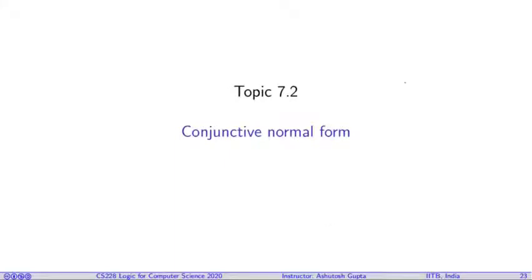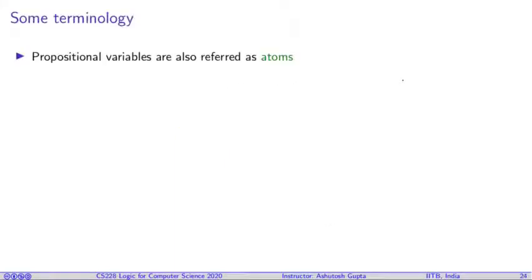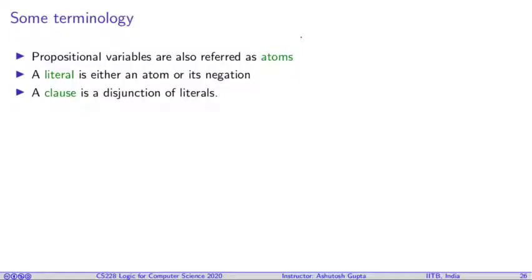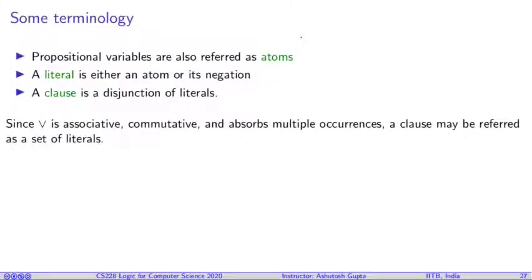Now let us try to understand conjunctive normal form. Before understanding conjunctive normal form, you must understand few terminologies. We call a propositional variable as atomic formulas. A literal is either an atom or its negation.